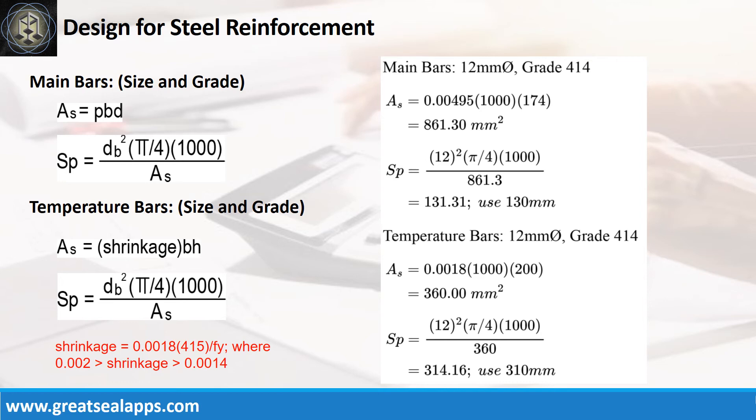And the spacing for 12 mm bar is 130 mm. The area of steel for temperature bars is 360 square millimeters, and the spacing for 12 mm bar is 310 millimeters.